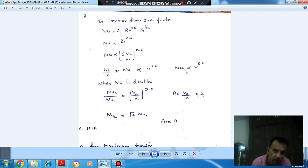So NU1 is proportional to V1^0.5. When velocity is doubled, NU2/NU1 equals (V2/V1)^0.5. And V2/V1 equals 2, so NU2/NU1 equals 2^0.5 = √2. Option A is correct.